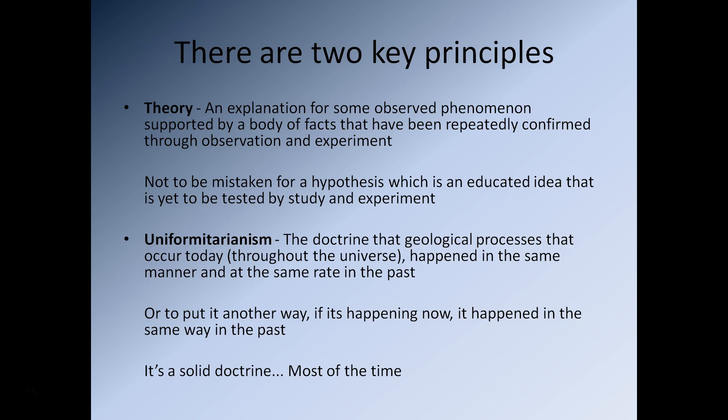Before we get started there are two key principles we're going to have a quick think about. The first one is the term 'theory', which is a term you've heard quite a lot, but unfortunately it gets used incorrectly quite a lot of the time. So a theory is an explanation for some observed phenomenon supported by a body of facts that have been repeatedly confirmed through observation and experimentation. The common way we use the word theory is actually in place of the word 'hypothesis'.